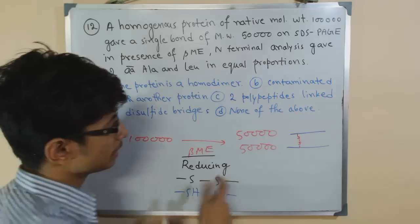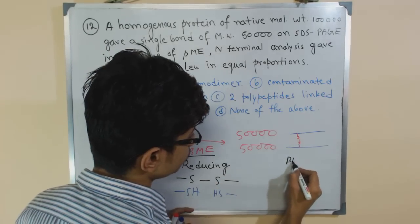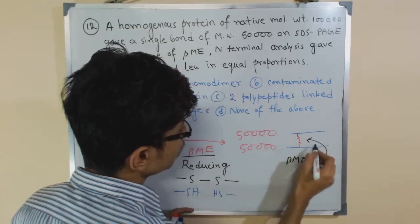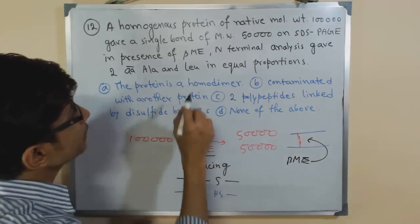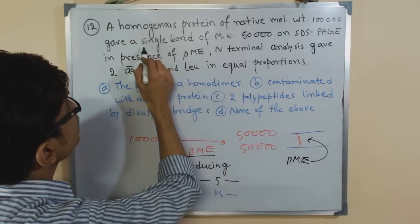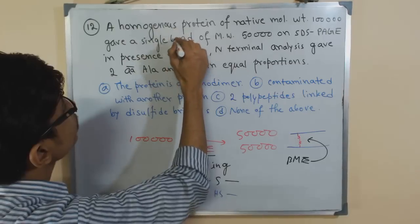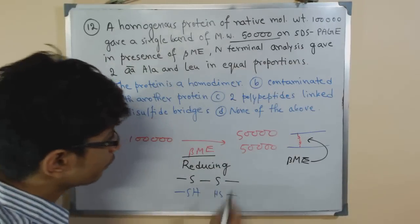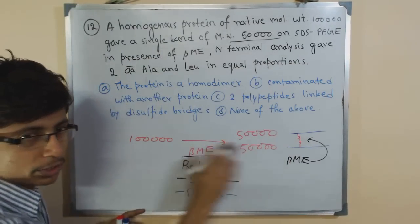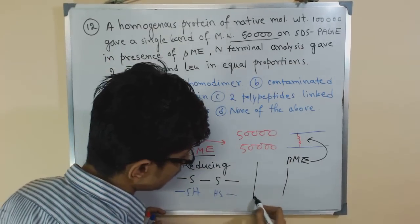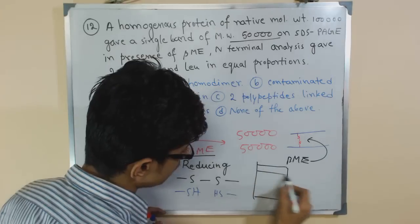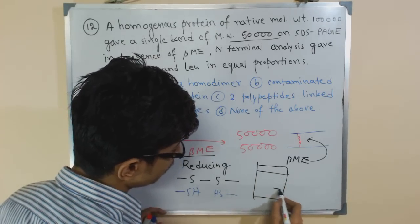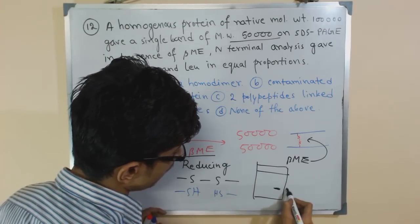So it gives rise to 50,000. In this case what we get, we get a single band of the molecular weight of 50,000. Now if we run it after this whole treatment is done, we run it into the gel or the gel electrophoresis that SDS-PAGE, what we get, we get one band only at 50,000.